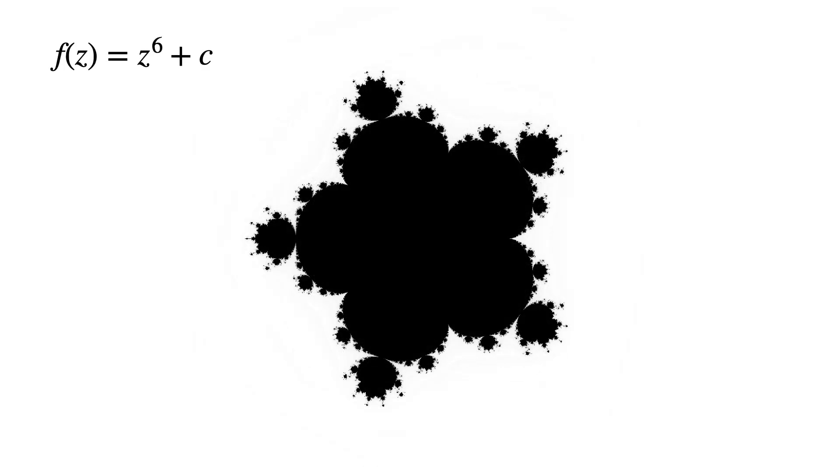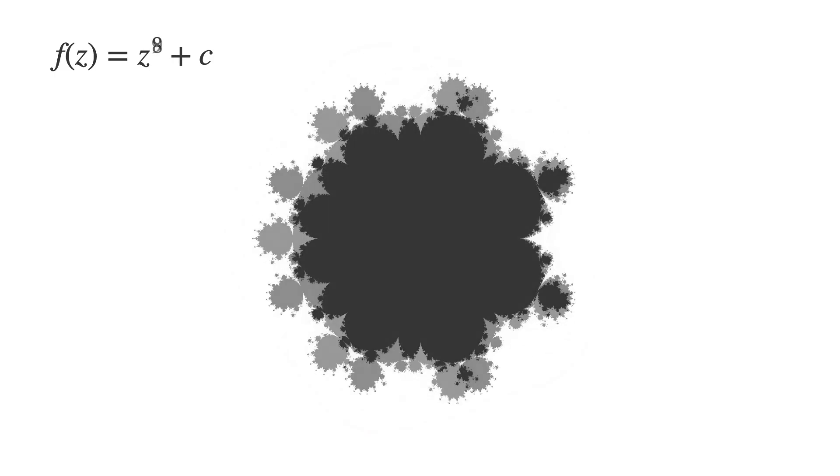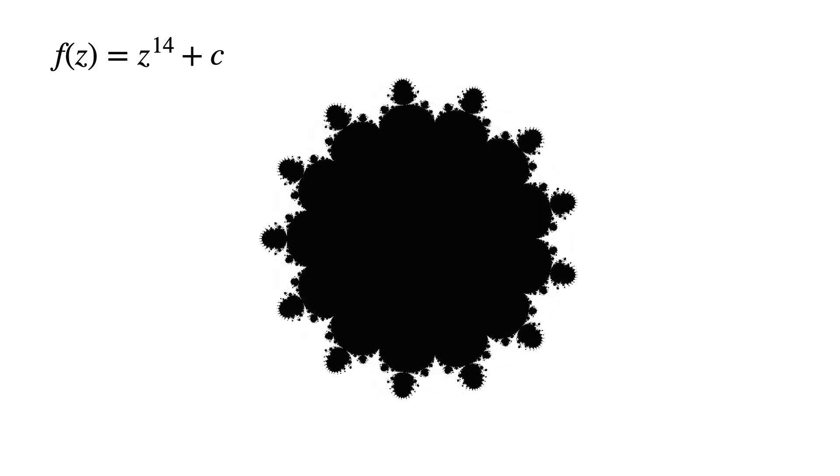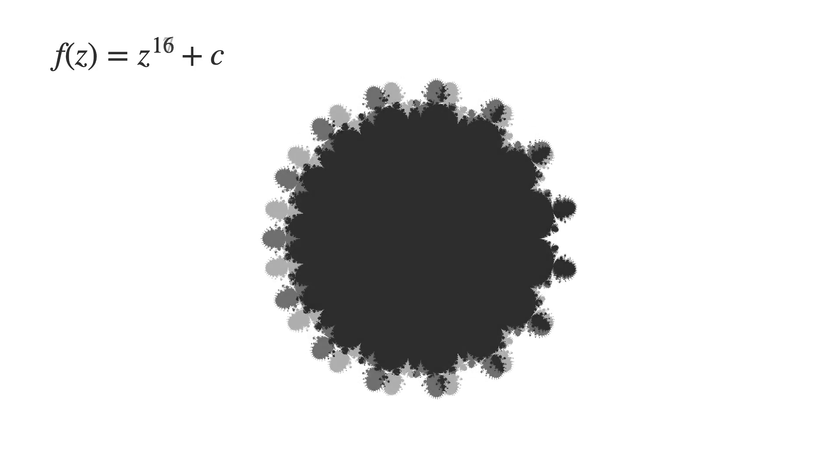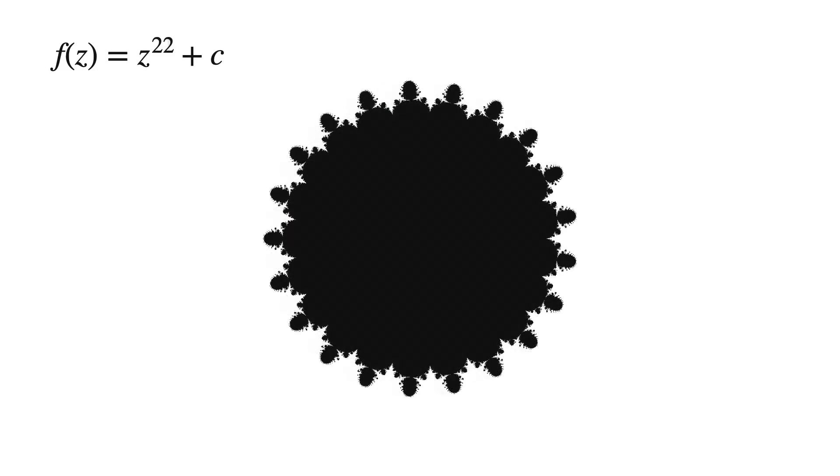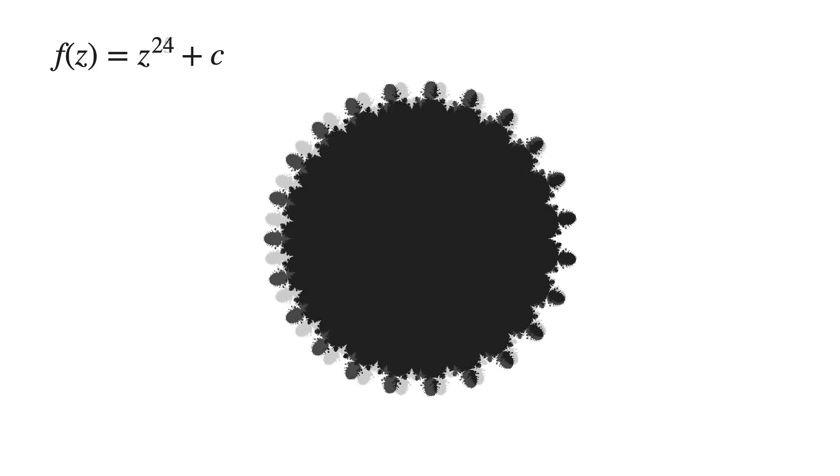If you simply go up by one power each time, similar types of structures continue to emerge where at each step one additional outer cusp is added. Therefore, throughout this process, the number of cusps along the edge is one less than the power each time.